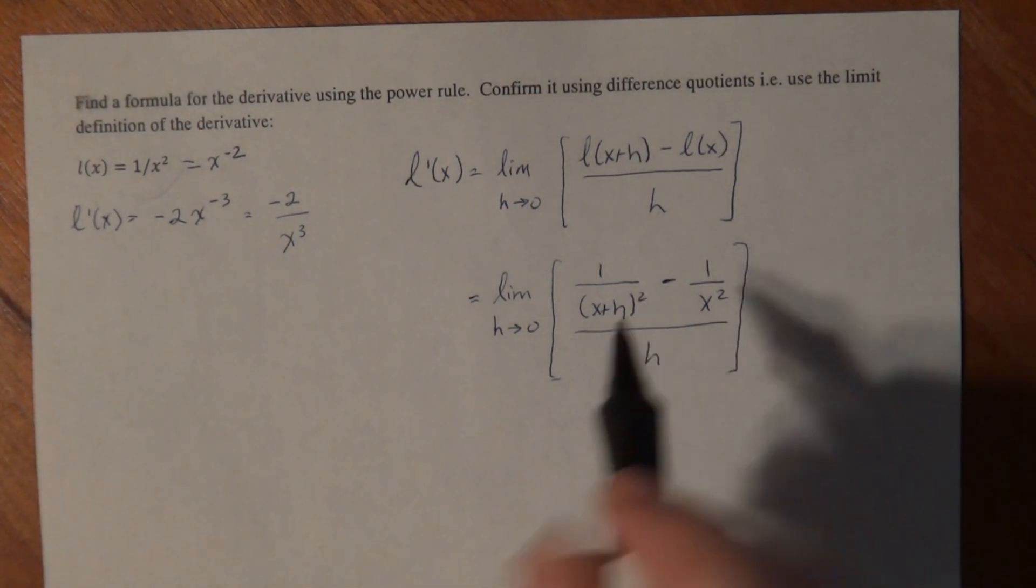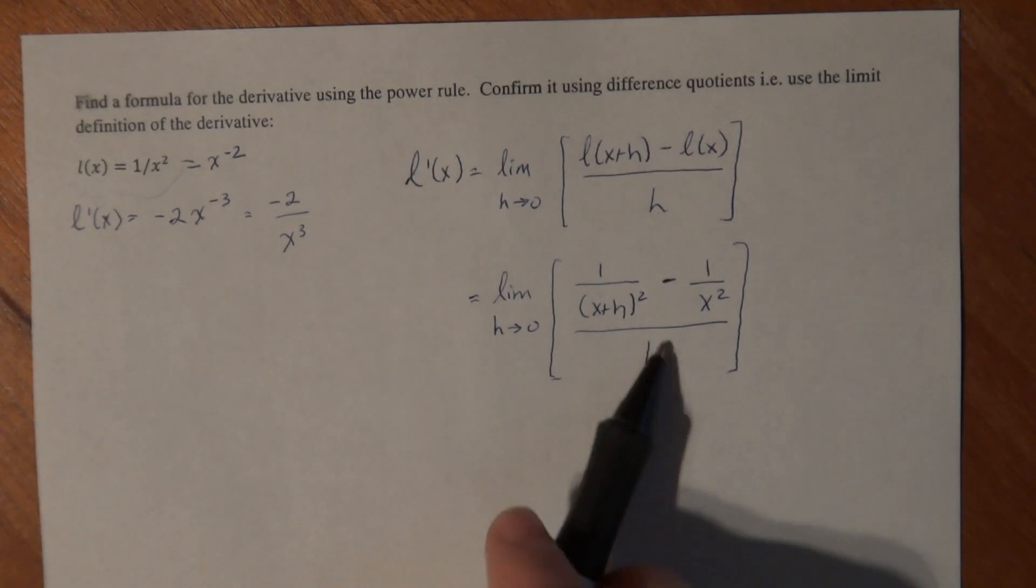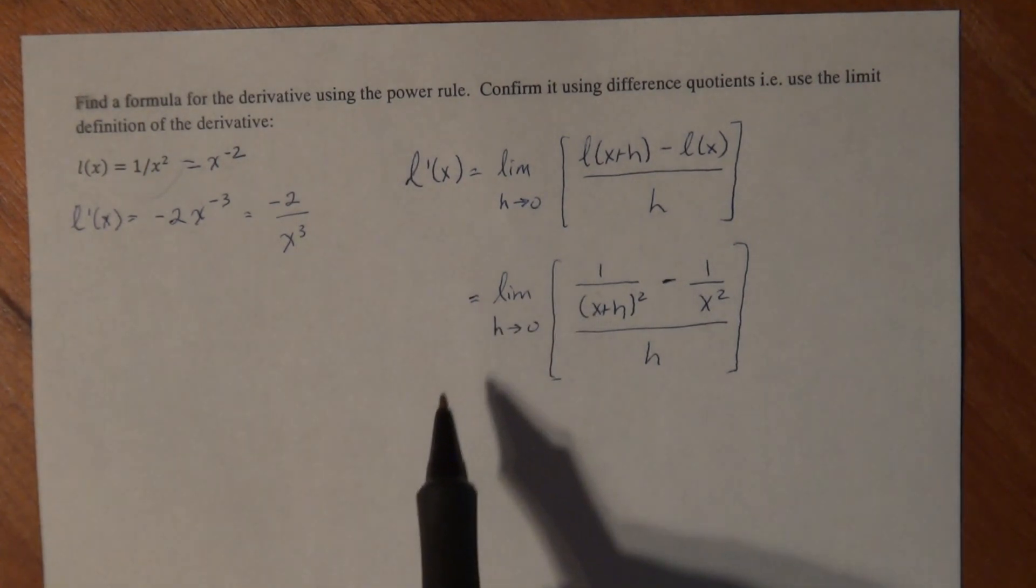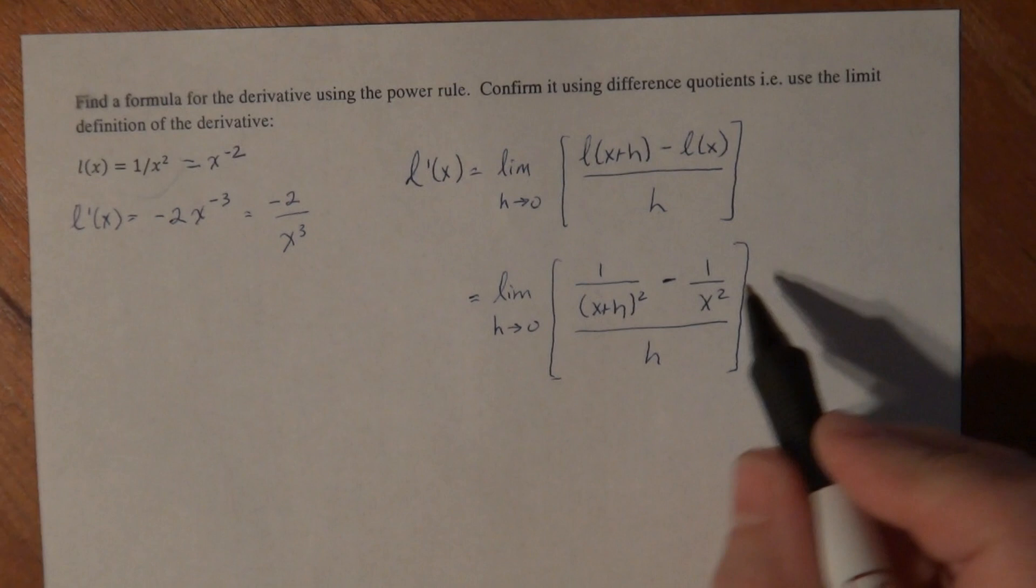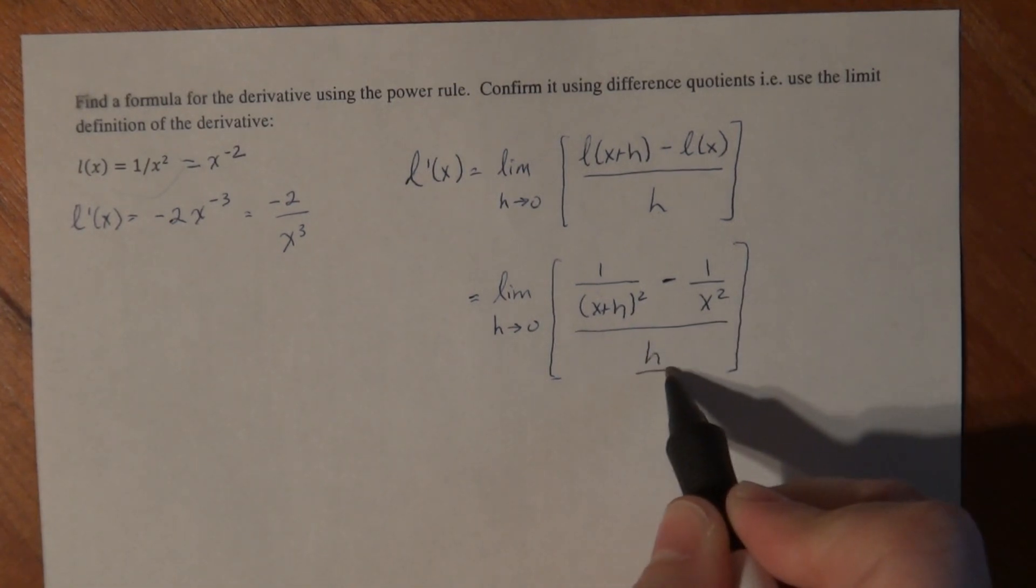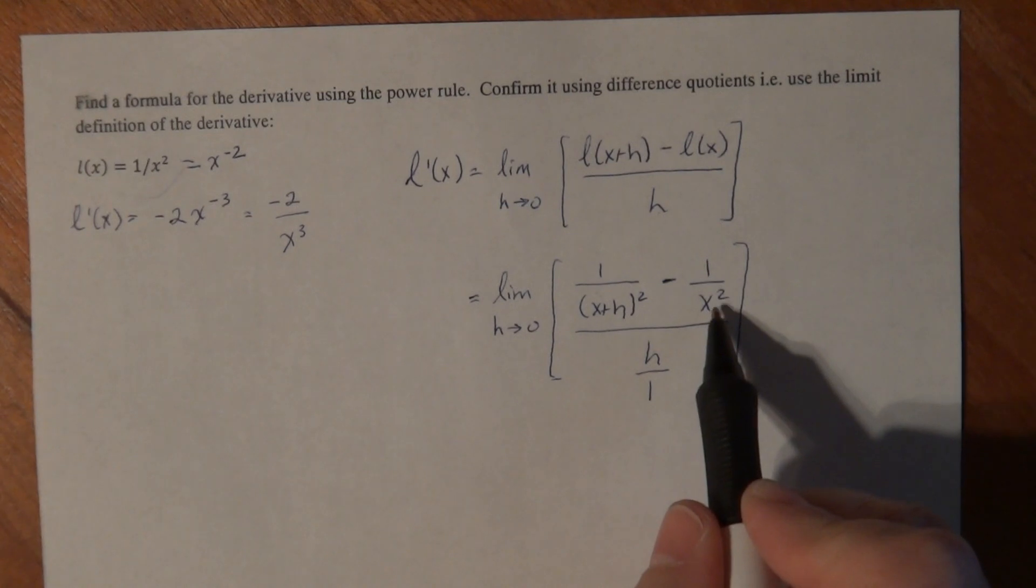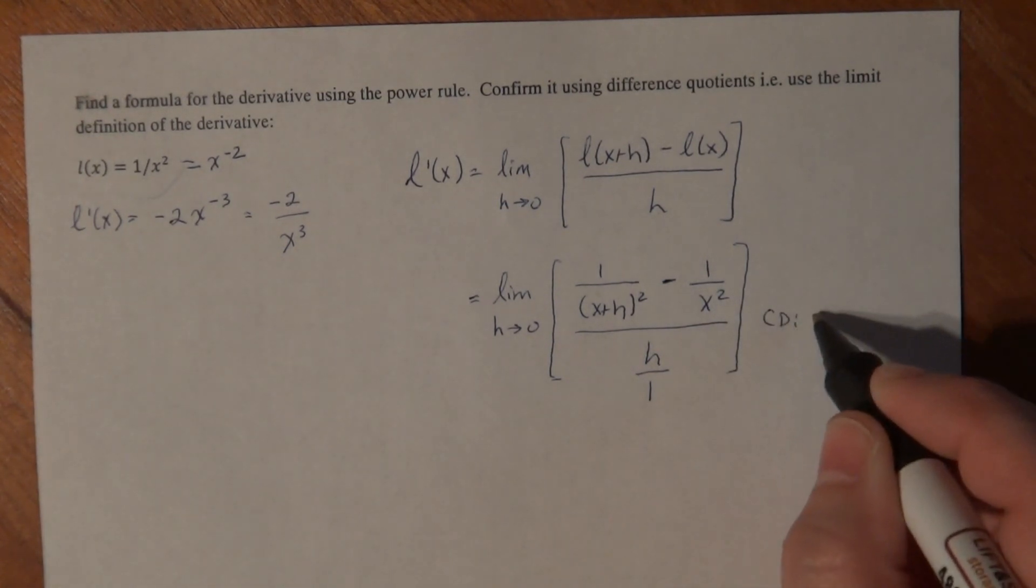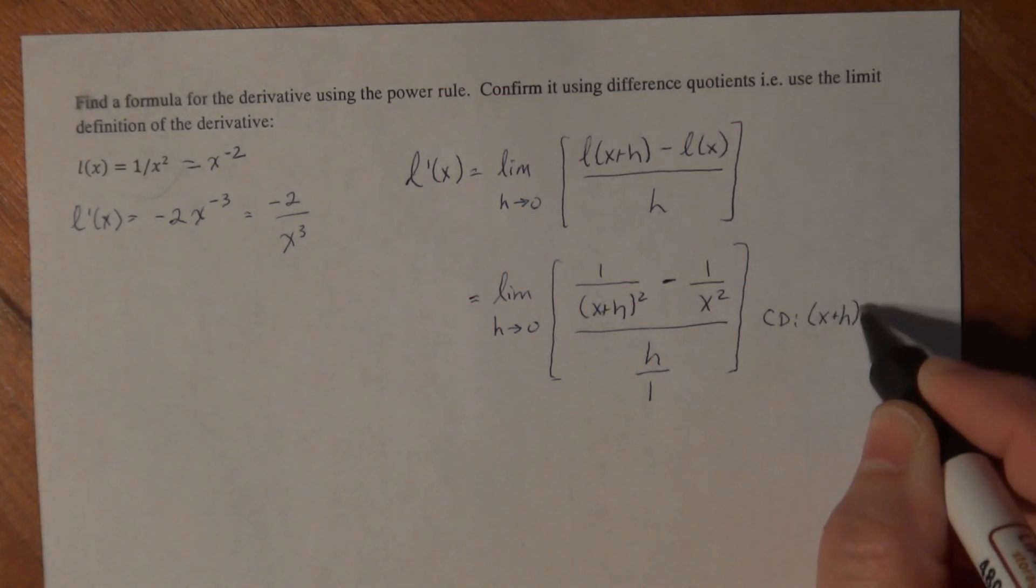Now if I try to take my limit at this point, I plug in 0 for h here and here, and I have something that's undefined. So I need to simplify this complex fraction. And the quickest way of doing that is using the concept of a common denominator. So there's three denominators here. I have x plus h squared, x squared, and 1. The common denominator, the quickest way to get a common denominator is just to multiply all the denominators together.